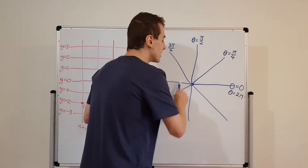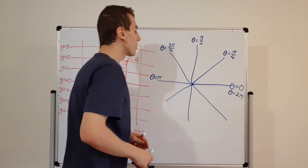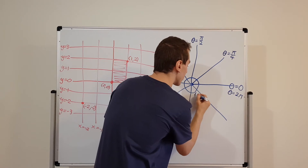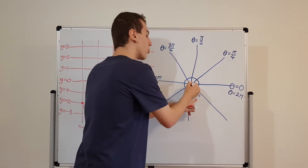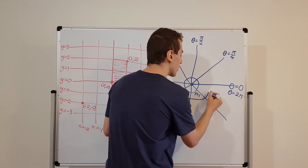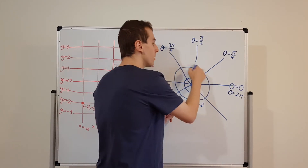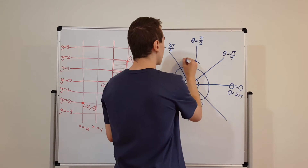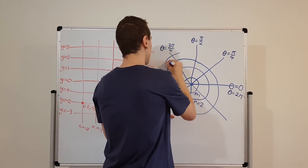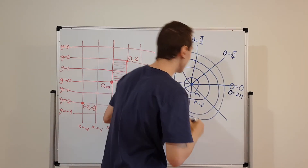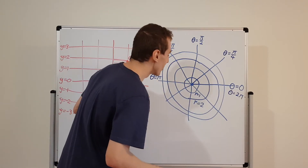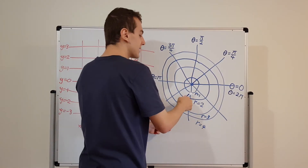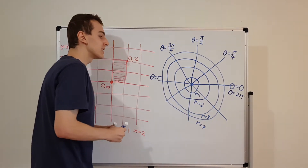Now I'm going to draw lines where the radius is constant — those are concentric circles. We'll call this circle r equals 1, meaning every point on it is one unit away from the origin. Then another concentric circle, r equals 2 — every point is two units away. I'll draw another circle for r equals 3, and another for r equals 4. These are the lines of constant radius, representing the radial distance from the origin.